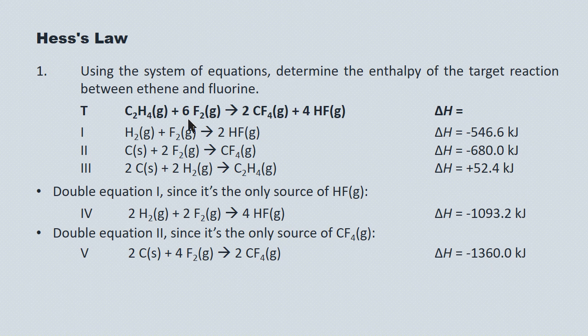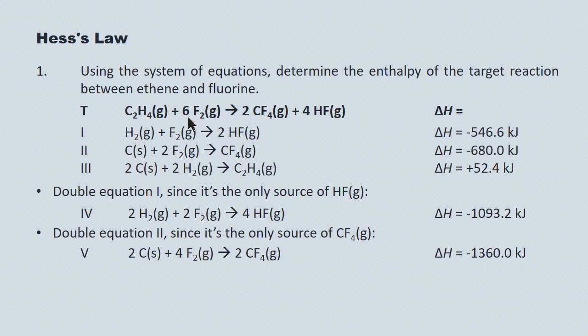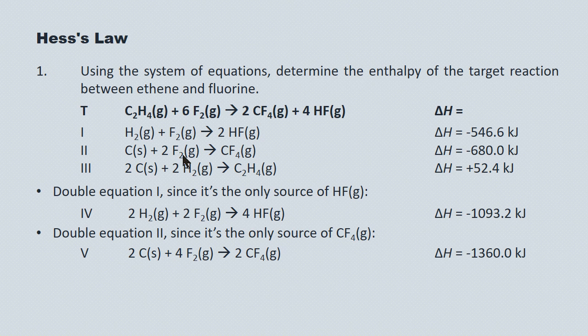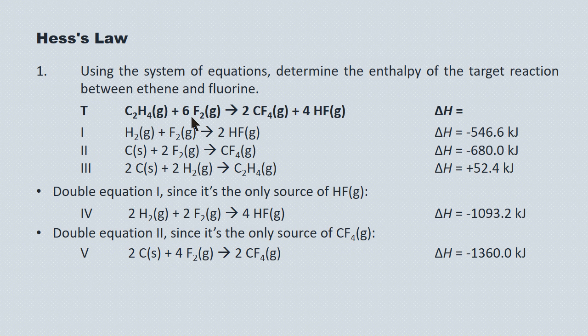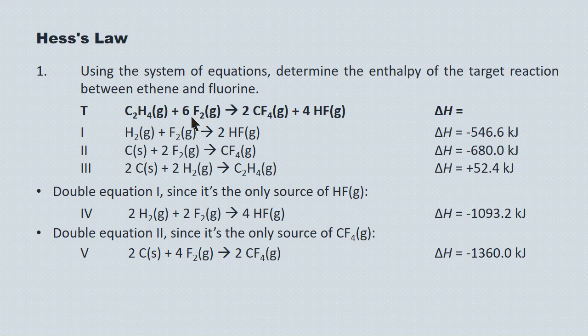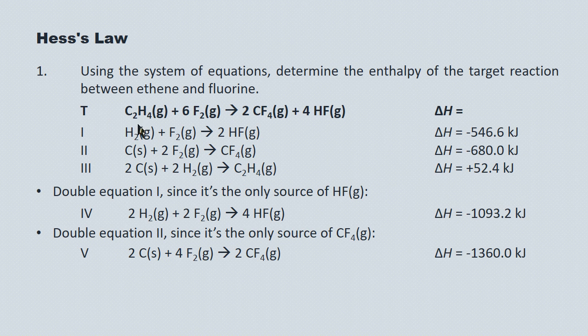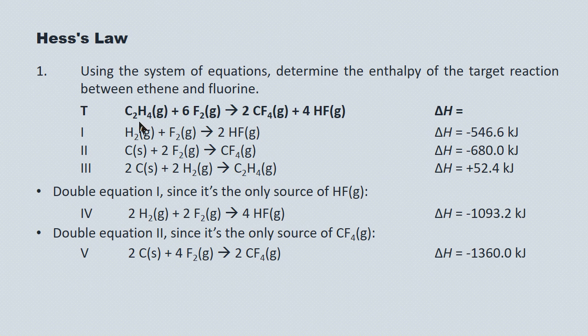I'm going to avoid the F2. And the reason I'm avoiding the F2 in the target is because you'll see there's two sources of F2. One in the first equation, one in the second equation. So you're not really sure which combination of those two equations is going to supply the target. Whenever you have two sources, two or more sources of any reagent, just skip over that reagent and work on the next one. And in this case, the next one is C2H4. The C2H4 only has one source, and that's from equation three.